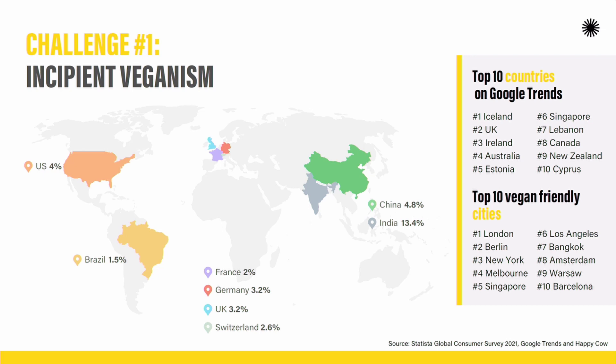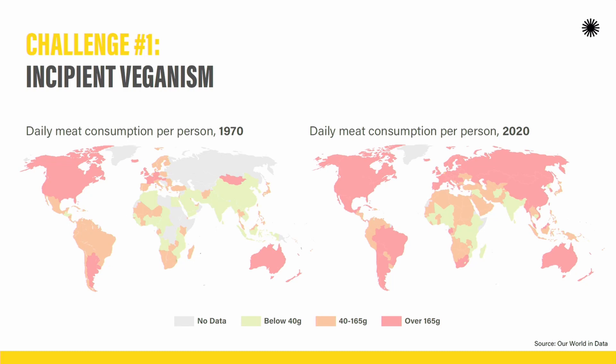You could argue that when we talk about veganism, people have to identify themselves as vegans. But maybe there are cuisines in the Global South that are very plant-based friendly — which is true, as we saw with India. And we know there are some traditional cuisines in Africa that are also pretty plant-based. We can then look at another graphic: meat consumption per capita in the world, comparing 1970 and 2020, from Our World in Data.